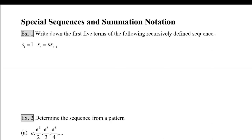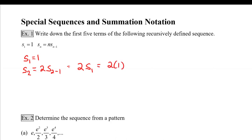Our first example asks us to write down the first five terms of the following recursively defined sequence where s sub 1 equals 1 and s sub n is equal to n times s sub n minus 1. We'll start by rewriting the first term: s sub 1 equals 1. Now following the formula, s sub 2 equals 2 times s sub 1, the prior value.